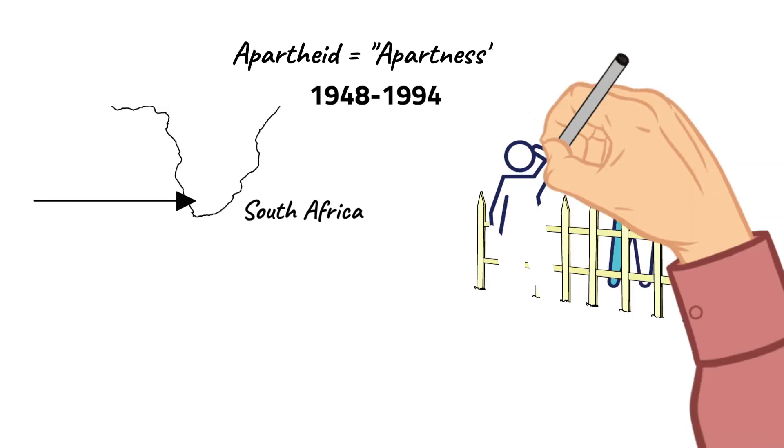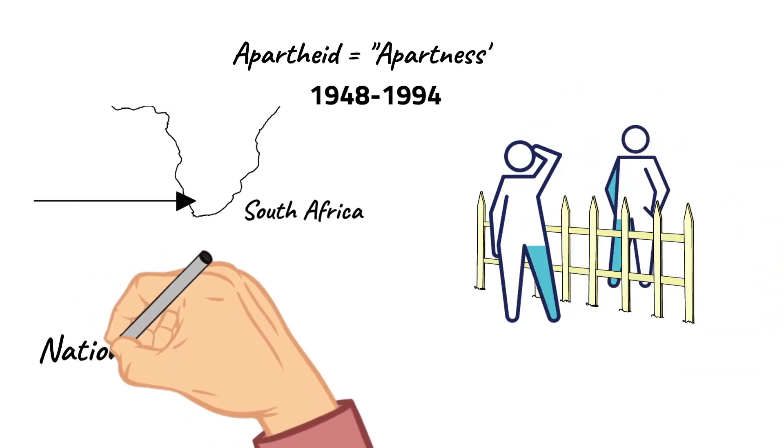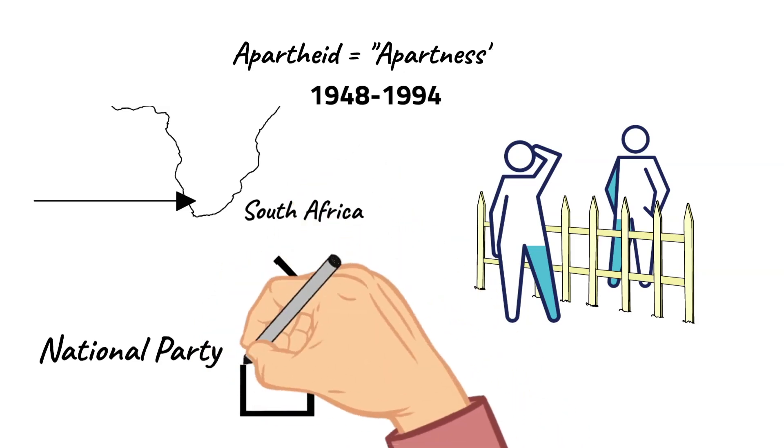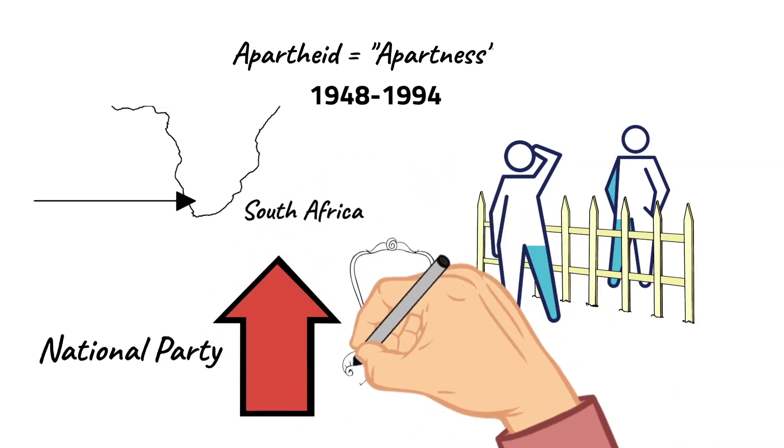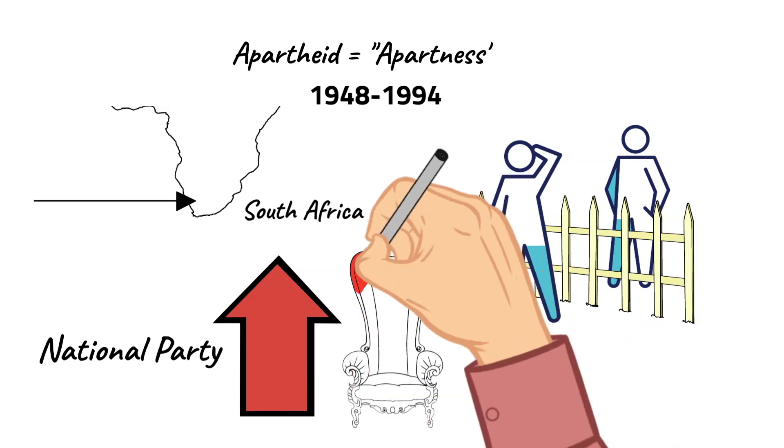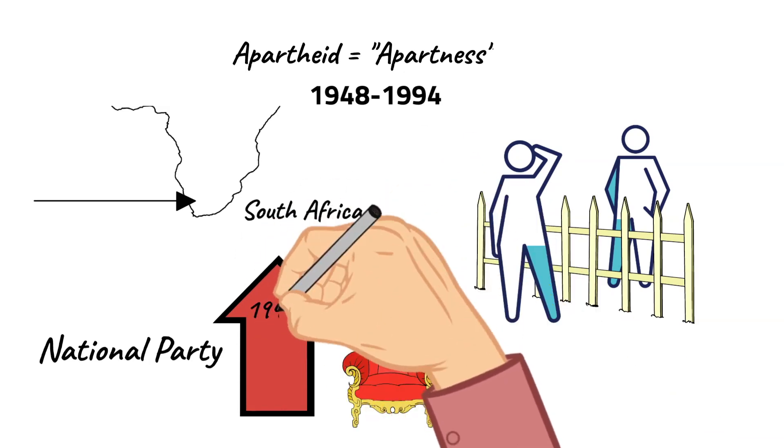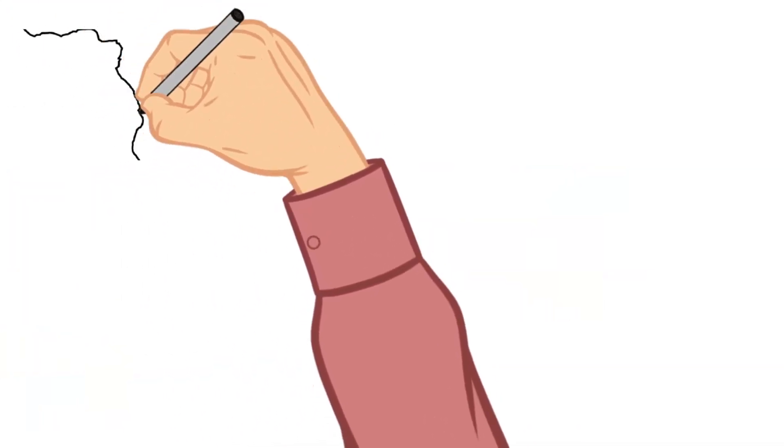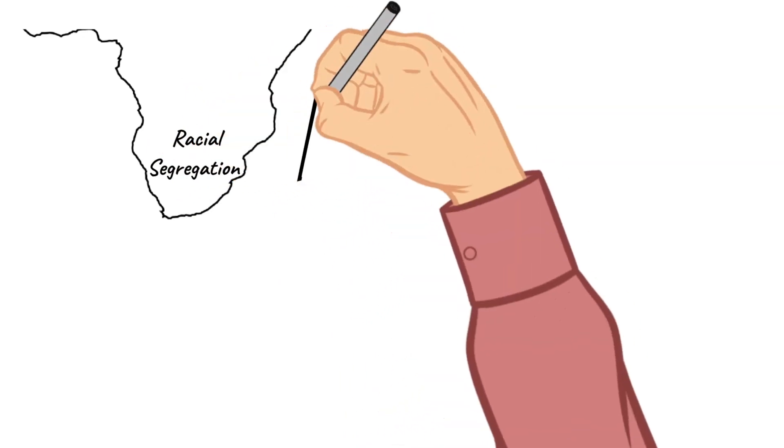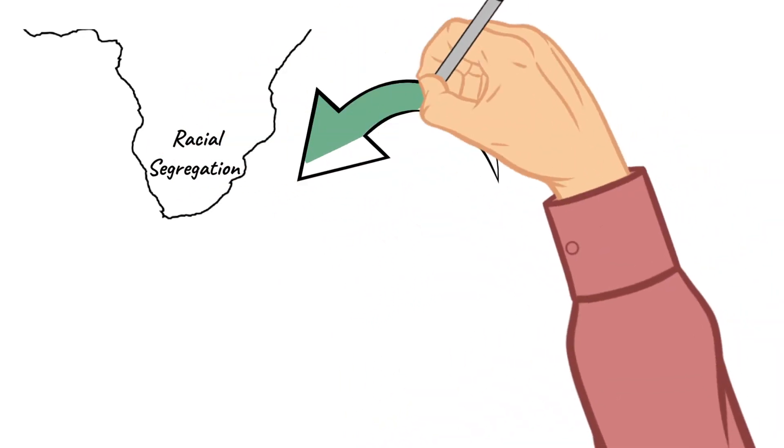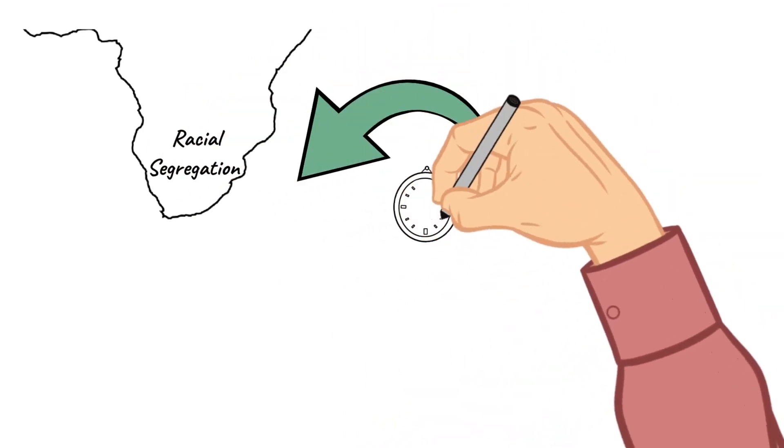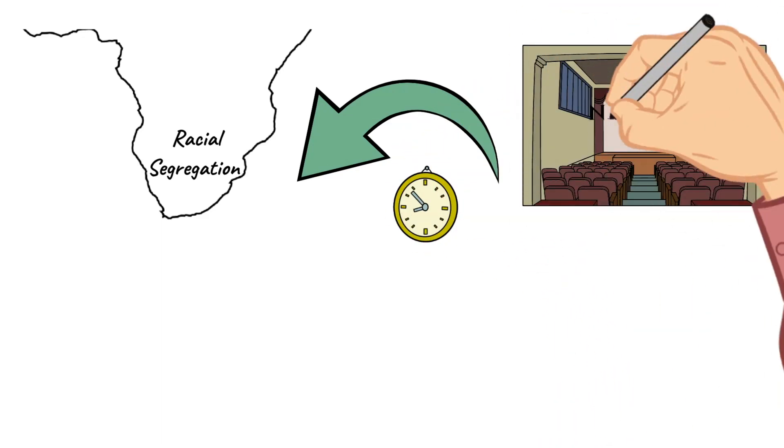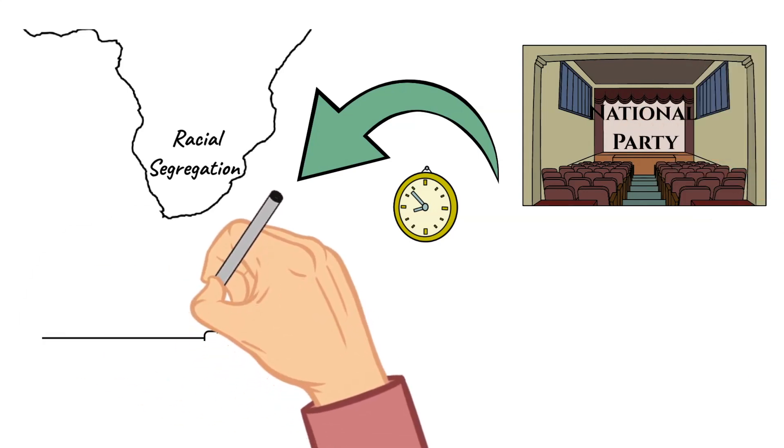The National Party, which was a legal party, rose to power in South Africa in 1948. Racial segregation was unfortunately part of the culture in South Africa long before the National Party ever even took the stage. But now this party rose to power and helped to support it.